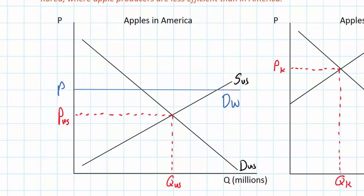I'll call this world price P.W. American apple growers can sell as many apples as they want to the rest of the world at P.W. Once the US market opens up to trade, the question is how many apples will be exported and how many consumed domestically. At a price of P.W., American consumers now pay more for their apples because they are competing with foreign consumers for demand.